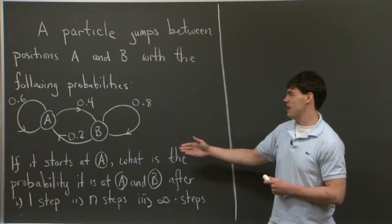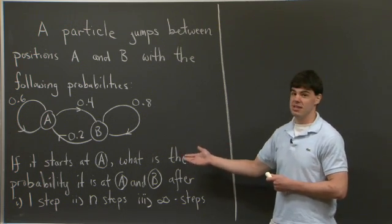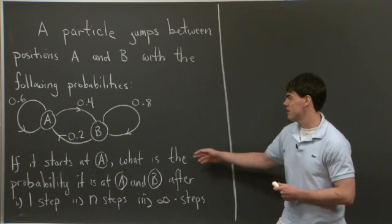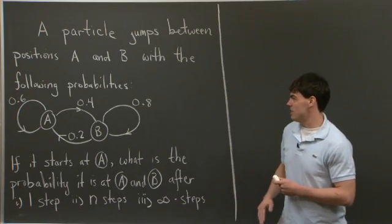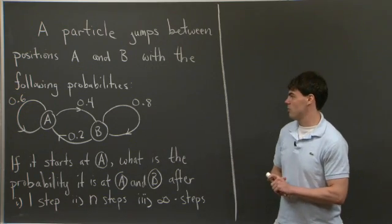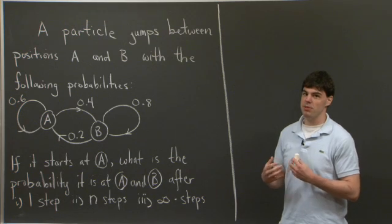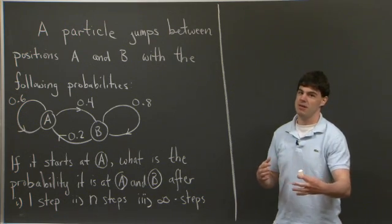If it starts at A and jumps to B with probability 0.4, or starts at A and stays at A with probability 0.6, or if it starts at B, then it goes to A with probability 0.2, or stays at B with probability 0.8,